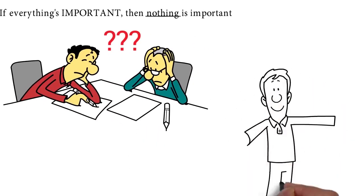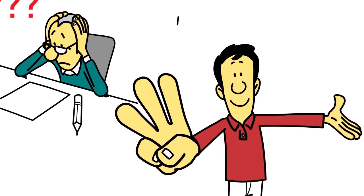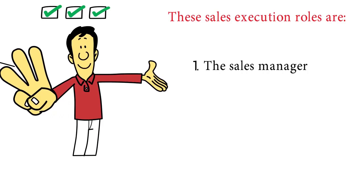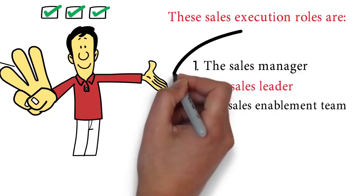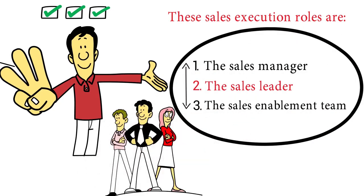There are three critical roles involved in breaking through growth barriers. Each function needs to make the right decision and have access to the right frameworks to help. These sales execution roles are the sales manager, the sales leader, and the sales enablement team. These three roles must work together to ensure that salespeople can execute the sales strategy.